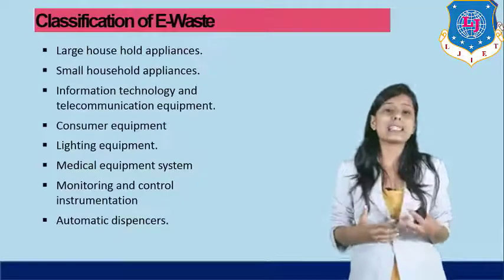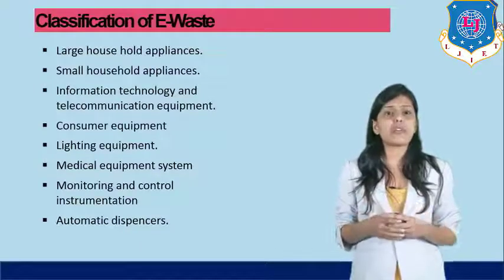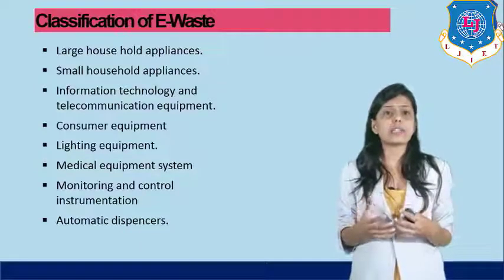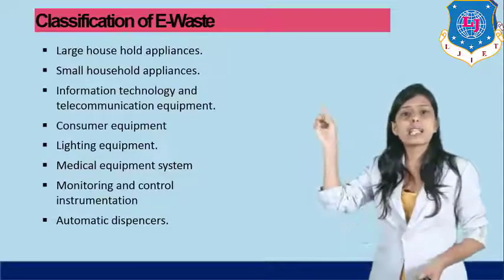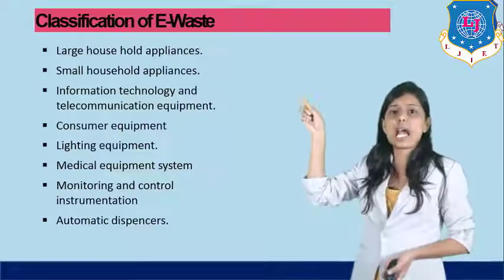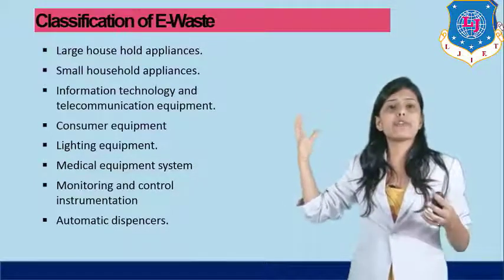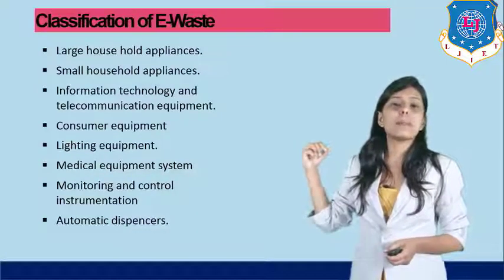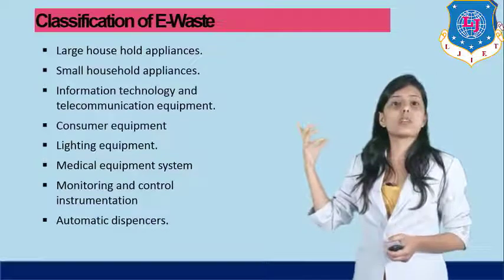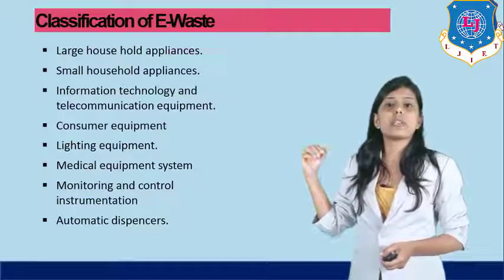How can we classify electronic waste? There are different sources from where electronic waste is emitted into the environment. The first classification is large household appliances — for example, a refrigerator is electronic waste because it is made of electronic equipment. Small household appliances such as mixers are also known as electronic waste.